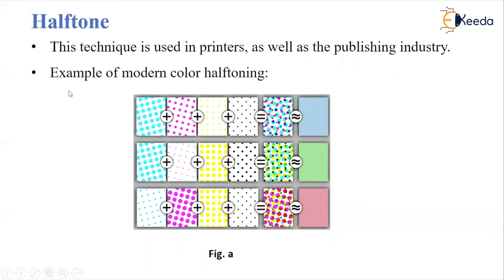Nowadays, halftone can be used for colored pictures also. This technique is used in printers as well as in the publishing industry. These are examples of modern color halftoning, where we have used a variety of colors — four different colors — and formed a certain pattern. If we see it from a distance, we will get a particular color, like blue. In the same way, we combine these four colors, make tiny dots, and zoom in to see the different combinations of color used to get a certain color. We will see the continuous tone from a far distance and get different colors with the help of halftoning.